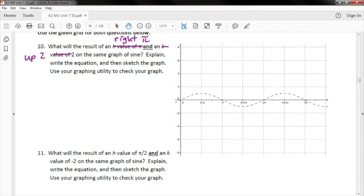So it would look like this: y = sin(x - π) + 2.